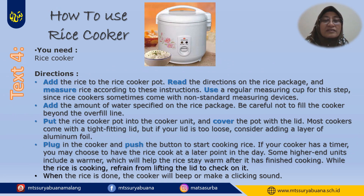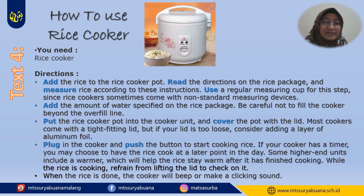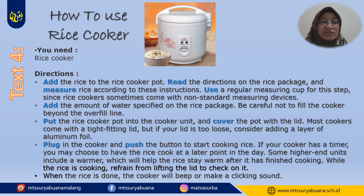This is another example of the text. Look at this — it has the aim: 'How to use a rice cooker.' That's the aim of this text. We also have the material listed: rice cooker. And we have the directions. But in these directions, we don't have numbering — instead we have dashes. The instructions are still presented in a good order.